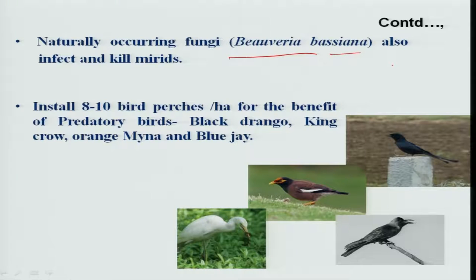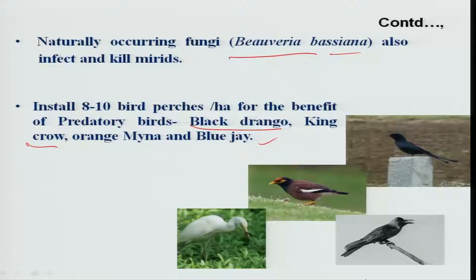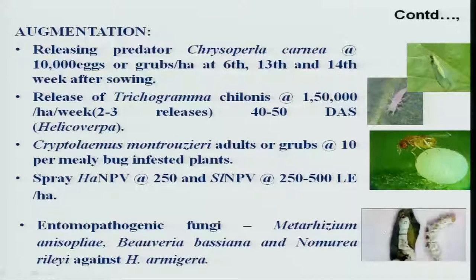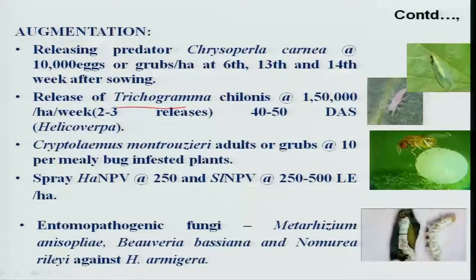By installing bird perches, you can attract important birds like black drongo and king crow, which feed on larvae of bollworms. For bollworms, it is better to augment various predators occurring naturally and commercially. Parasitoids such as Trichogramma egg parasitoids can also be augmented by continuous releasing.